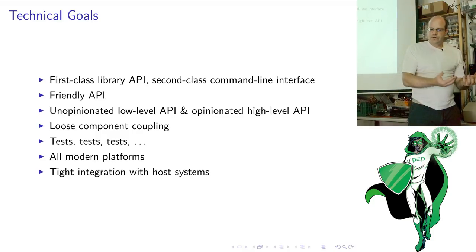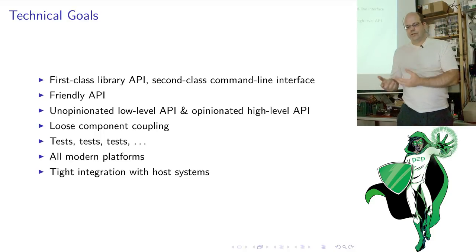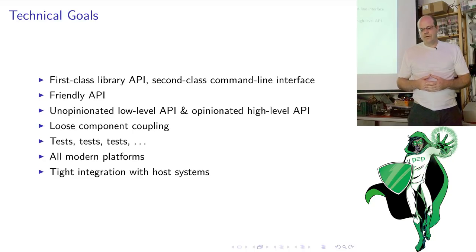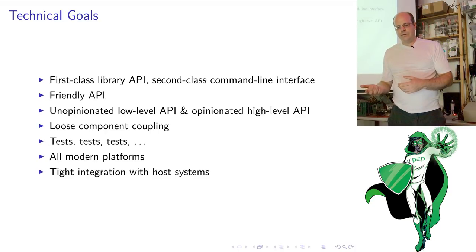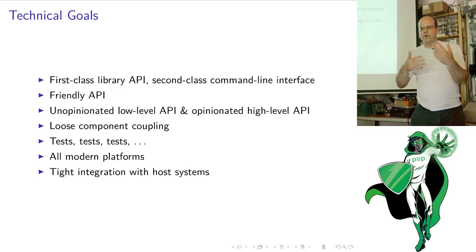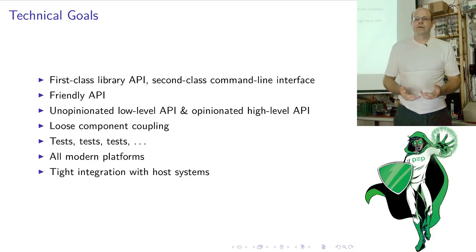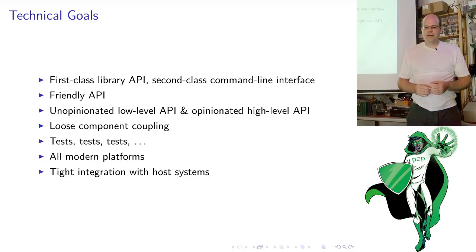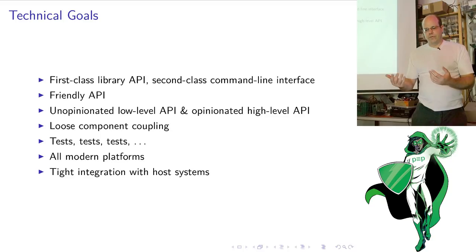We're community-oriented and talking to people, so one of our major goals is to develop an API that is friendly and easy to use. We're providing two interfaces — a low-level API and a high-level API. The idea behind the high-level API is that you can do something like sign-encrypt and you don't even have to know anything about OpenPGP. The low-level API lets you do those few things that the high-level API doesn't provide for specialized use cases. It's not one or the other — you can use both; they're complementary.